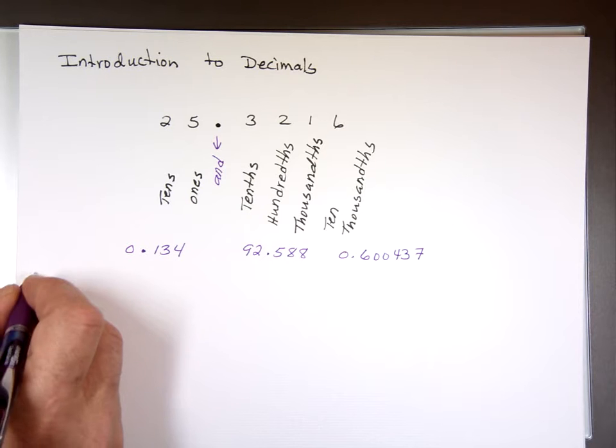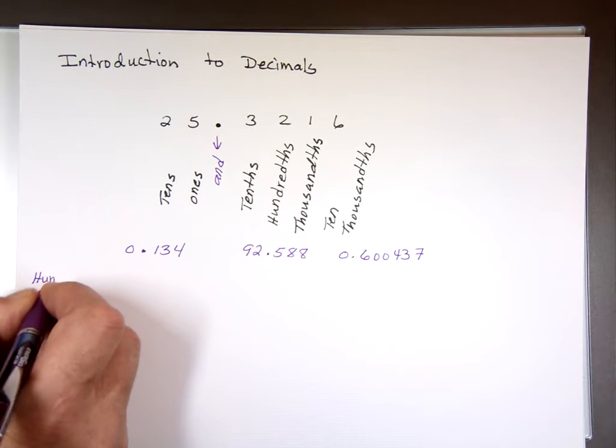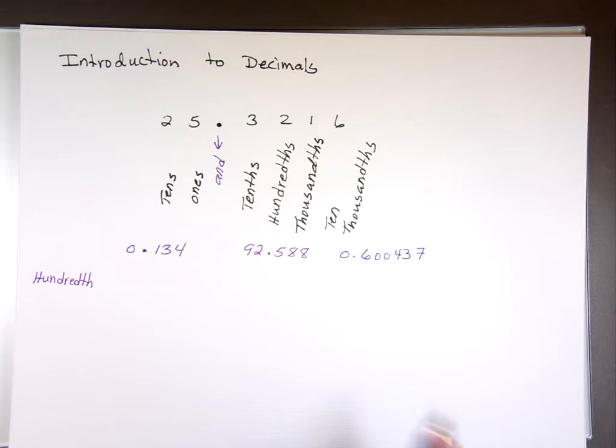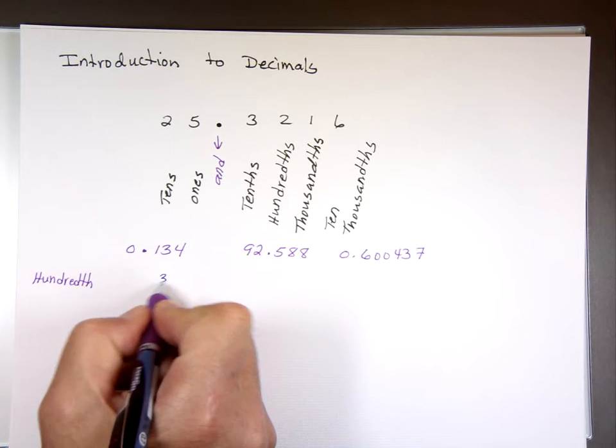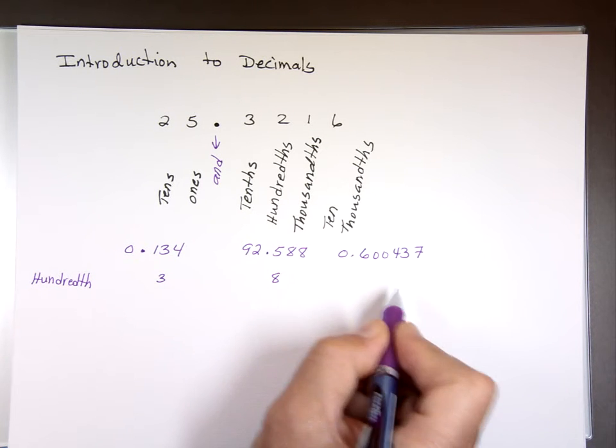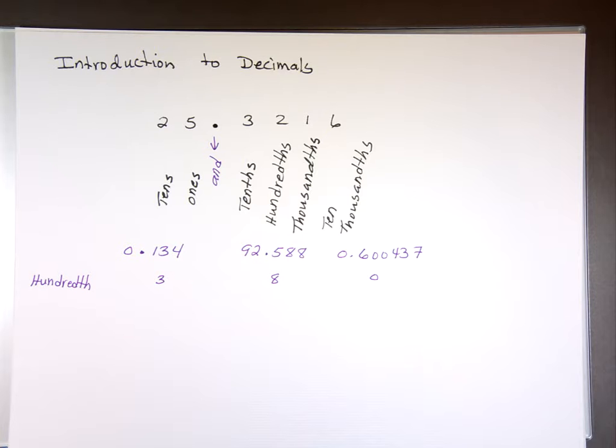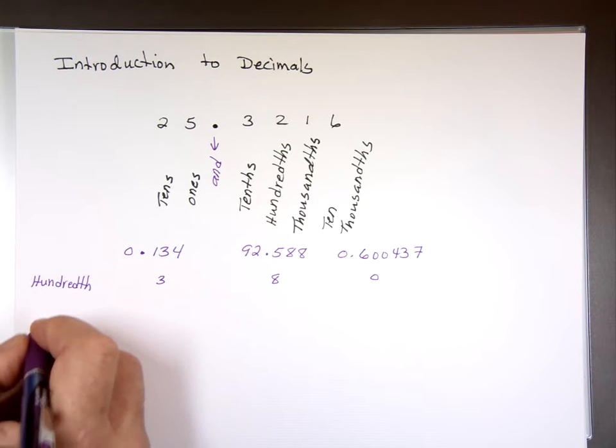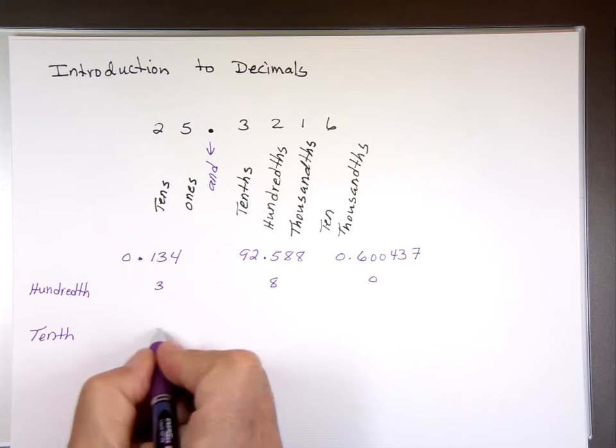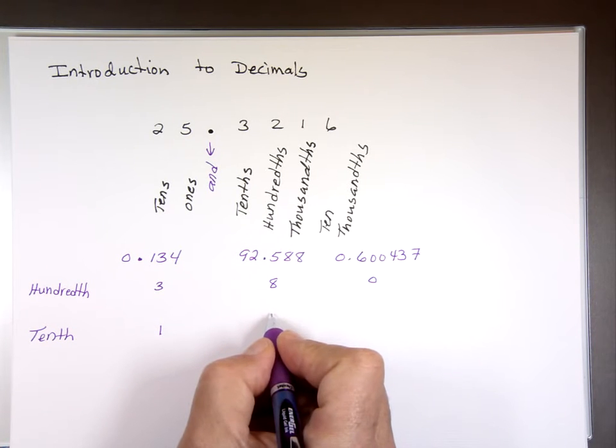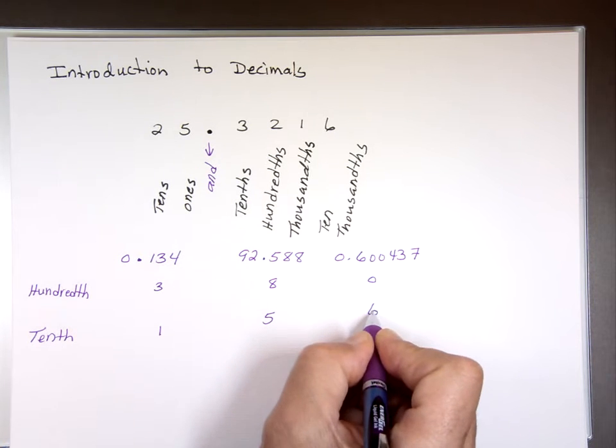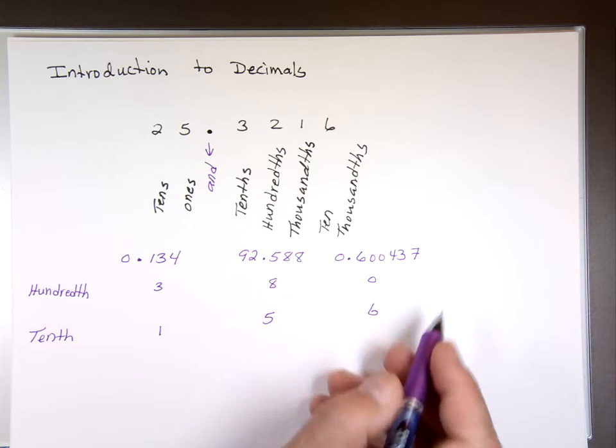What digit in the hundredth place for all of them? The three for this one, yes. The eight for this one. The zero for that one. What digit in the tenth place? For this one, it's the one. For this one, five. For this one, six. The first to the right, the decimal point.